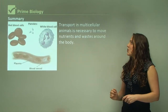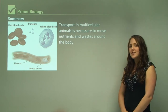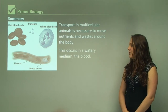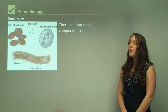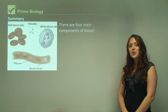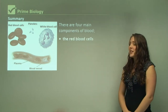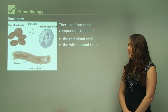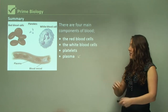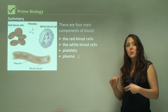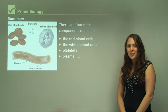In summary, transport in multicellular animals is necessary to move nutrients and waste around the body, and this occurs in a watery medium — the blood. There are four main components of blood: red blood cells, white blood cells, and platelets making up 45% of blood, and blood plasma making up 55% of blood. This concludes looking at the components of blood.